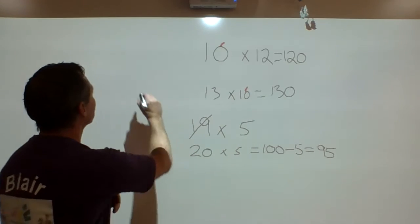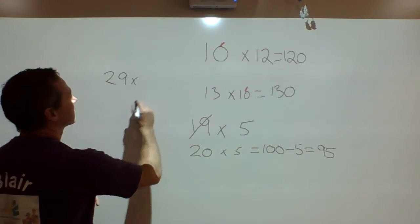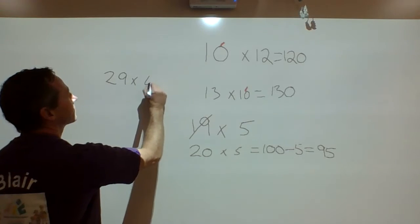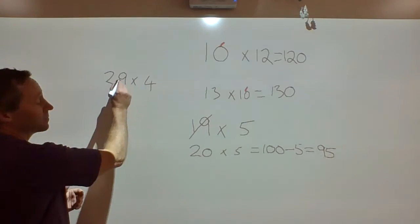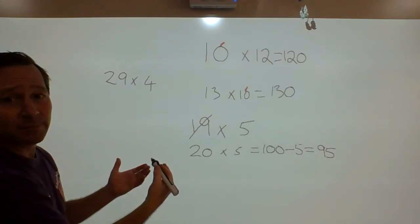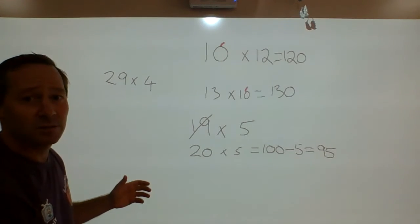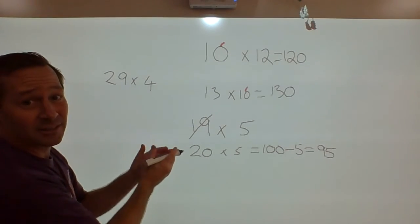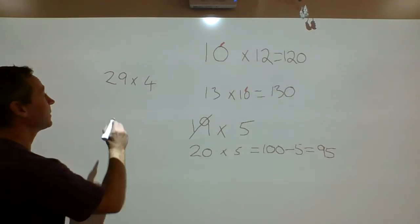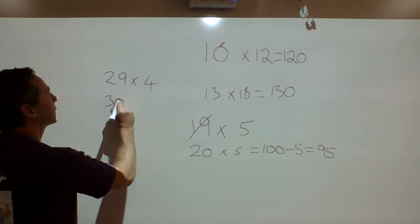Let's try another one: 29 times 4. A friendly number or tidy number, whatever your teacher refers to it as, is a number that ends in zero. The closest one would be 30.